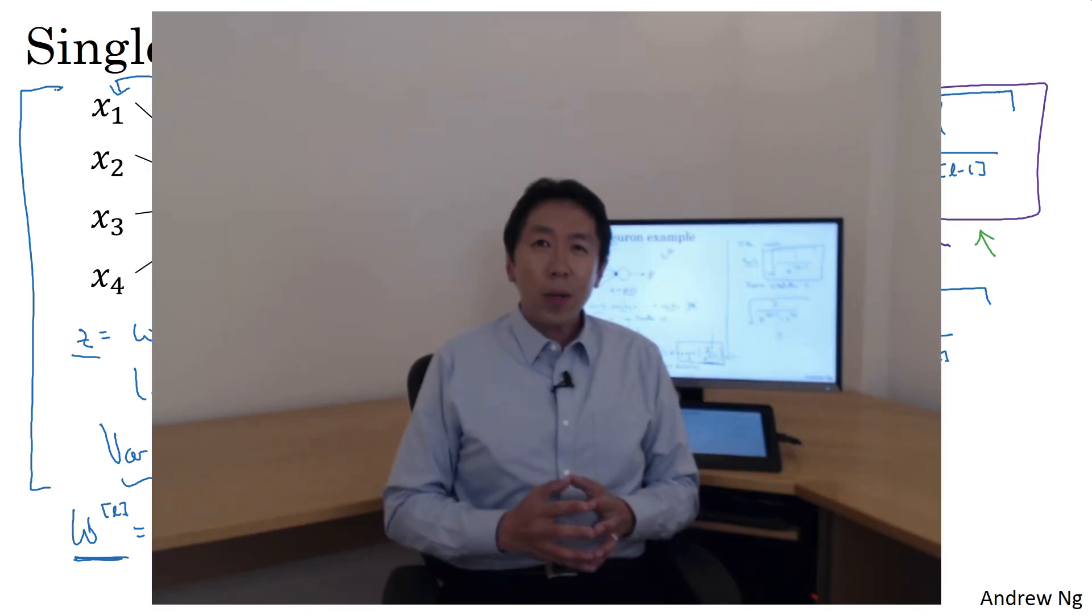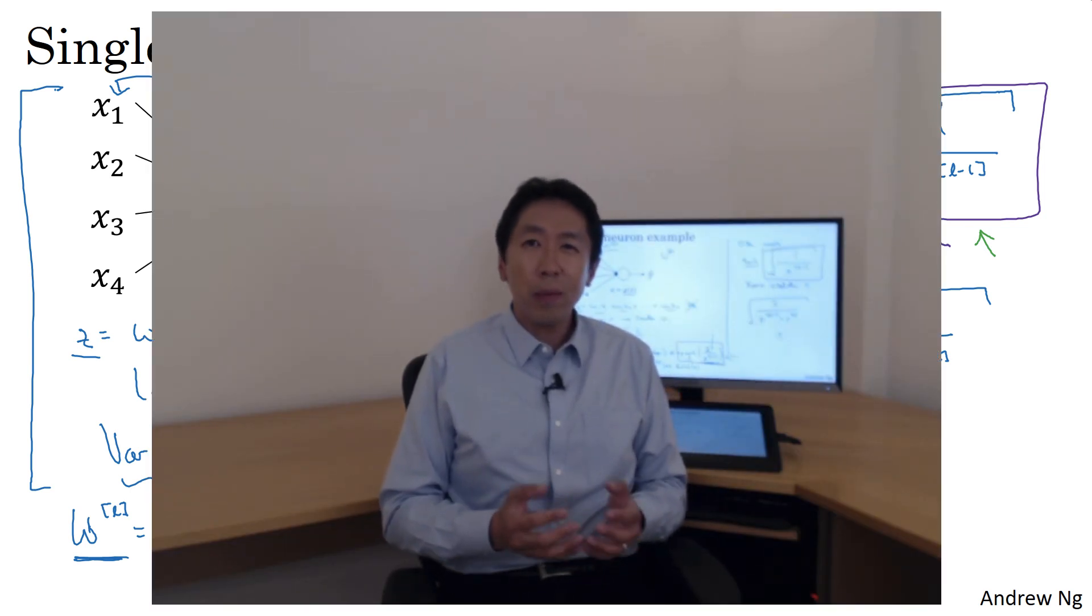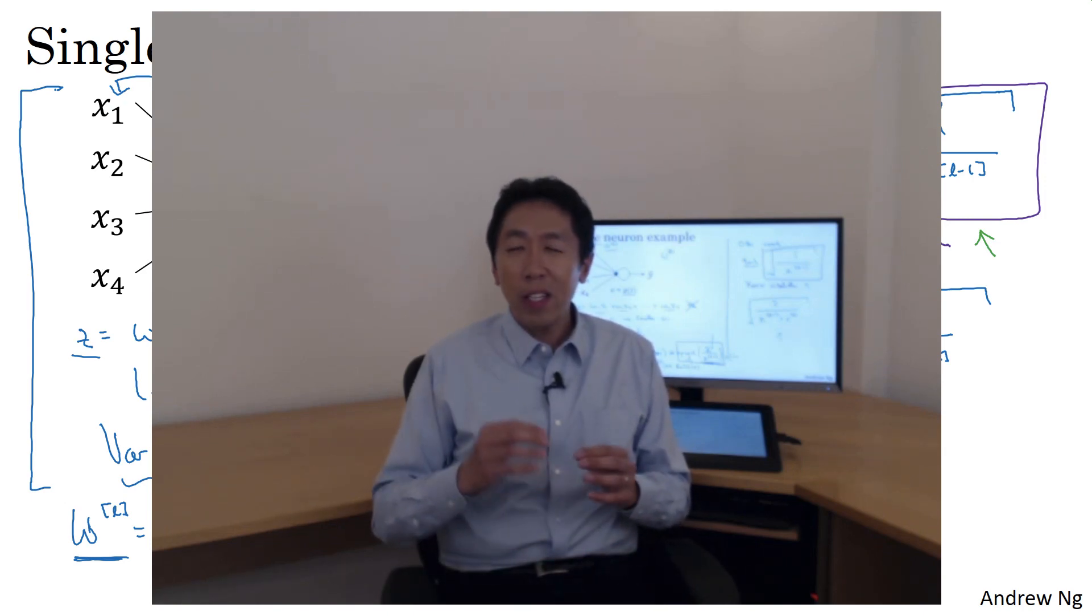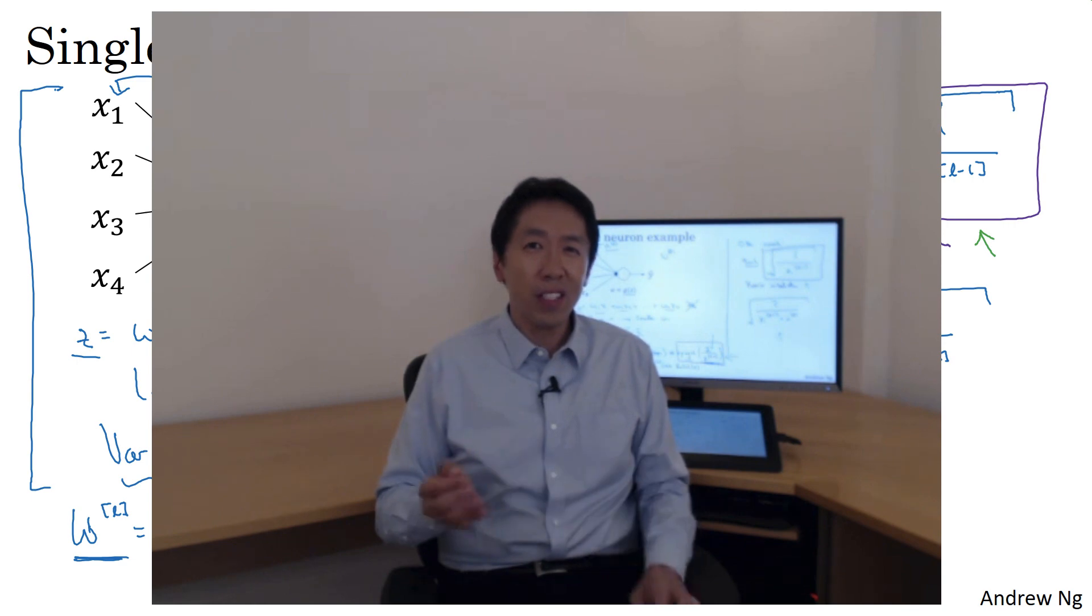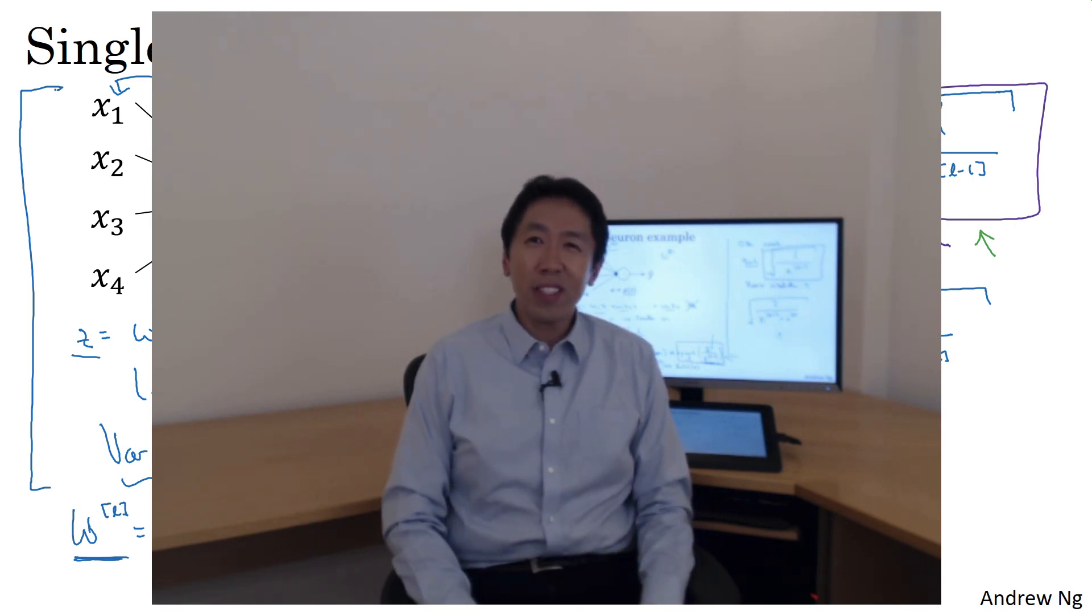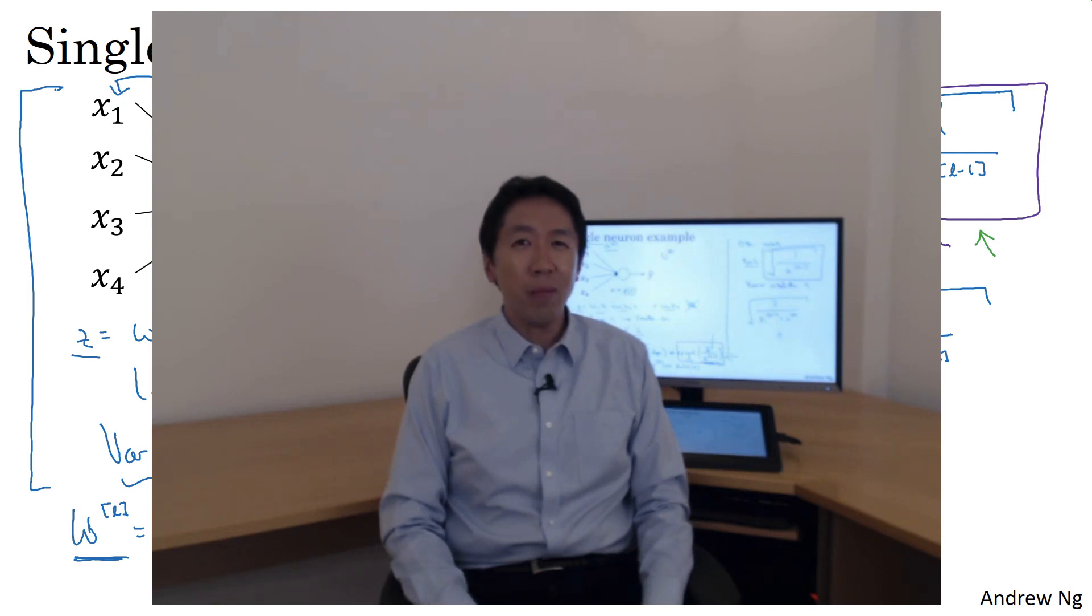So I hope that gives you some intuition about the problem of vanishing or exploding gradients as well as how choosing a reasonable scaling for how you initialize the weights. Hopefully that makes your weights not explode too quickly and not decay to zero too quickly so you can train a reasonably deep network without the weights or the gradients exploding or vanishing too much. When you train deep networks, this is another trick that will help you make your neural networks train much more quickly.